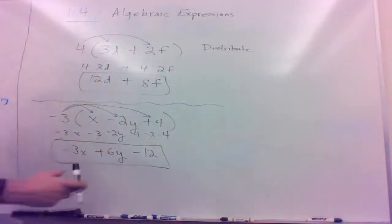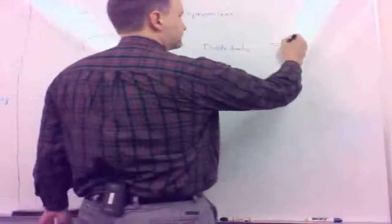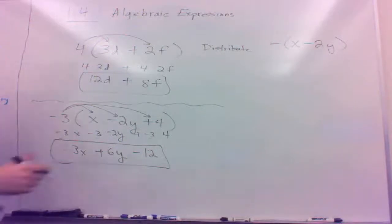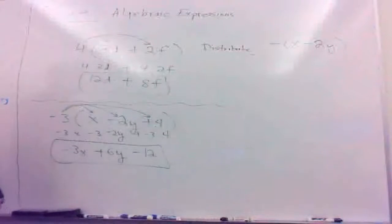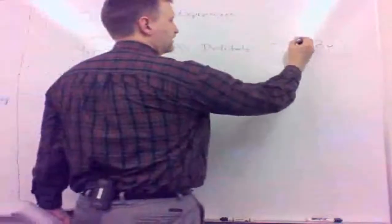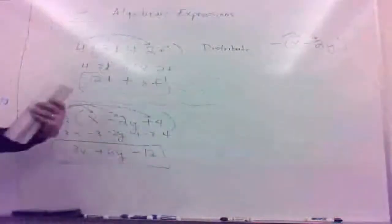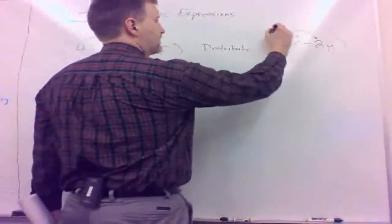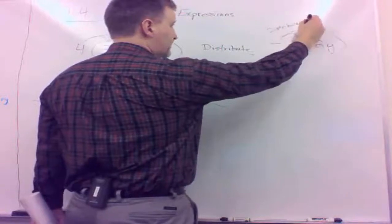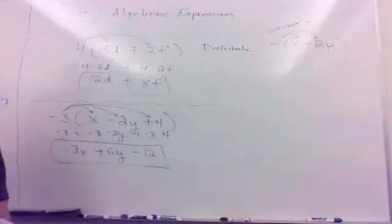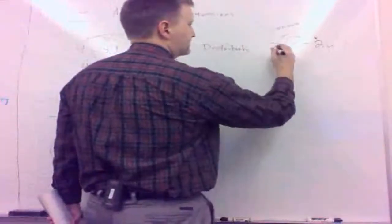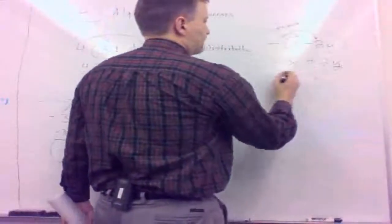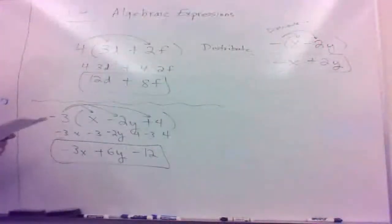Another thing that comes up quite a bit is a minus on the outside of parentheses. A minus on the outside of parentheses is the same as distributing — technically you're distributing a minus 1. So for something like minus (x minus 2y): minus 1 times x is minus x, and minus 1 times minus 2y — a minus times a minus is a positive — giving positive 2y.